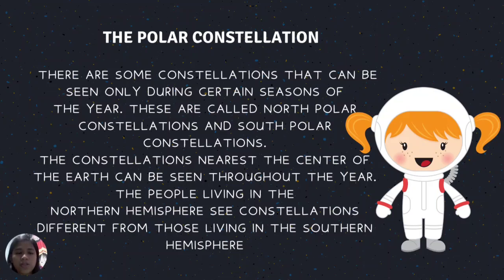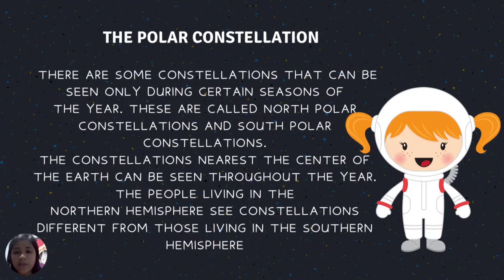There are some constellations that can be seen only during certain seasons of the year. These are called north polar constellations and south polar constellations. Constellations nearest the center of the earth can be seen throughout the year. People living in the northern hemisphere see constellations different from those living in the southern hemisphere.